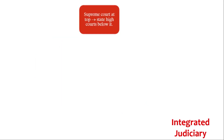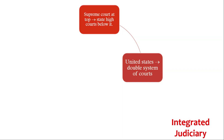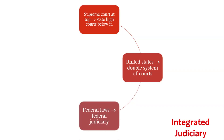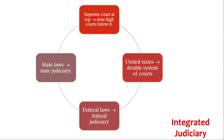Integrated Judiciary: The Constitution of India follows an integrated judicial system with the Supreme Court at the top level and the state high courts working below it. This single system of courts ensures that both central laws and state laws are obeyed. In the United States, there is a double system of courts — federal laws are implemented by federal judiciary and state laws by state judiciary.